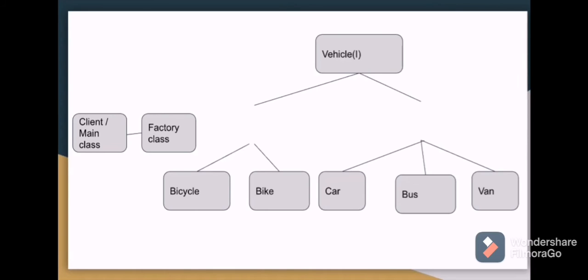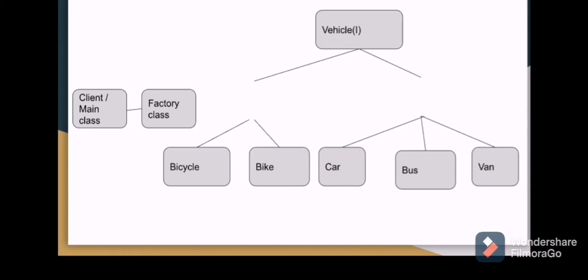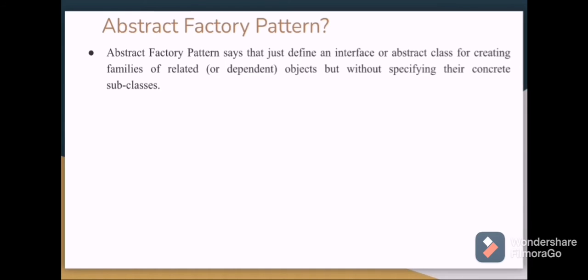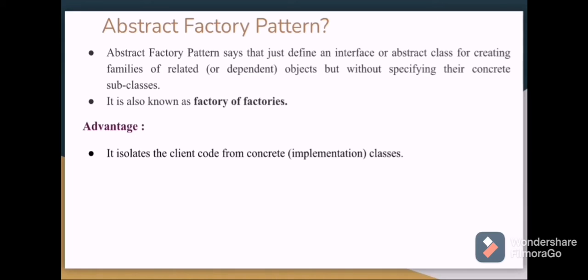The advantage of the factory pattern is that it allows subclasses to choose the type of object to create, making code more loosely coupled. Use it when you need to create objects of different classes based on input. What is the abstract factory pattern? Bicycle and Bike have common functionalities as two-wheelers, while Car, Bus, and Van come under four-wheelers. We create two more classes — TwoWheelers and FourWheelers — both implementing the Vehicle interface. This is like a family of objects. The abstract factory pattern defines an interface for creating families of related objects without specifying concrete subclasses. It is also known as factory of factories.